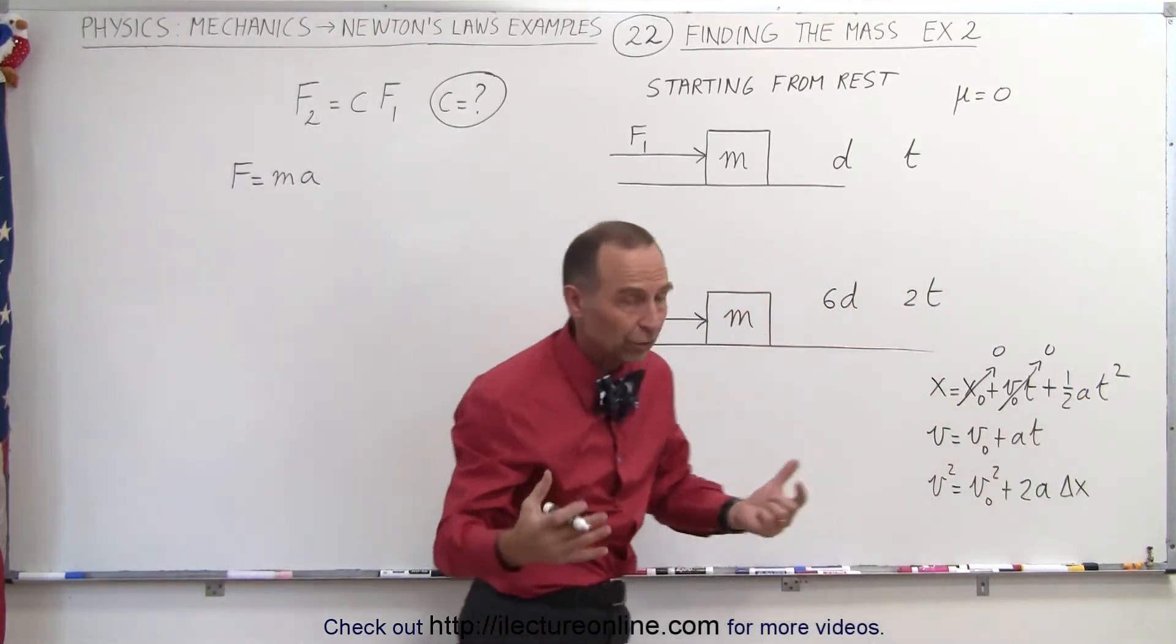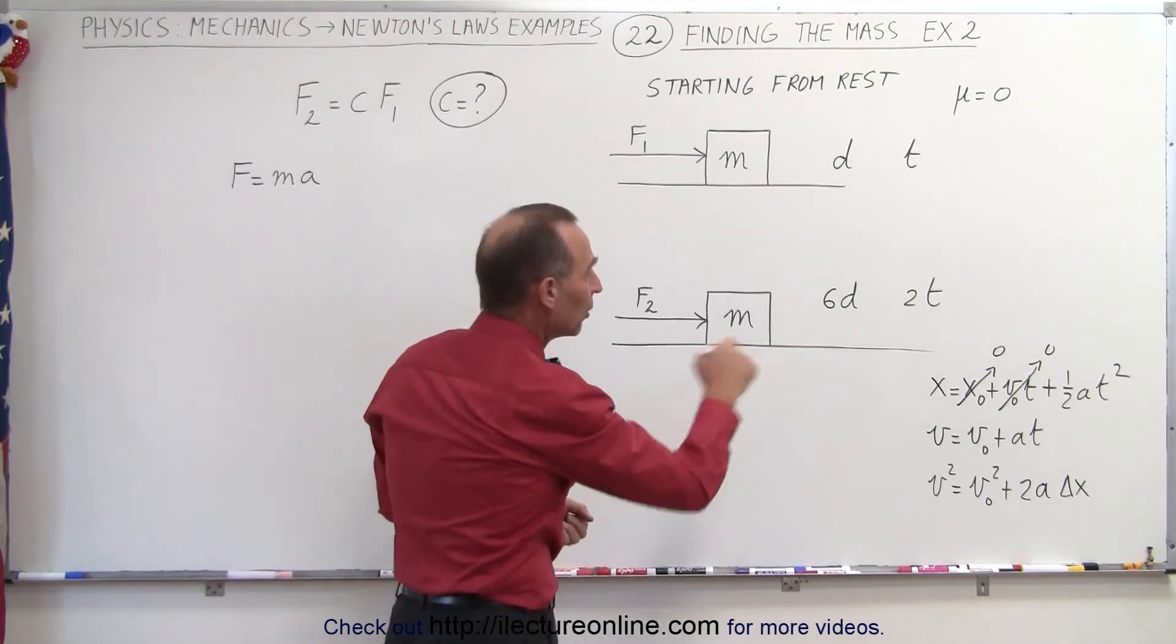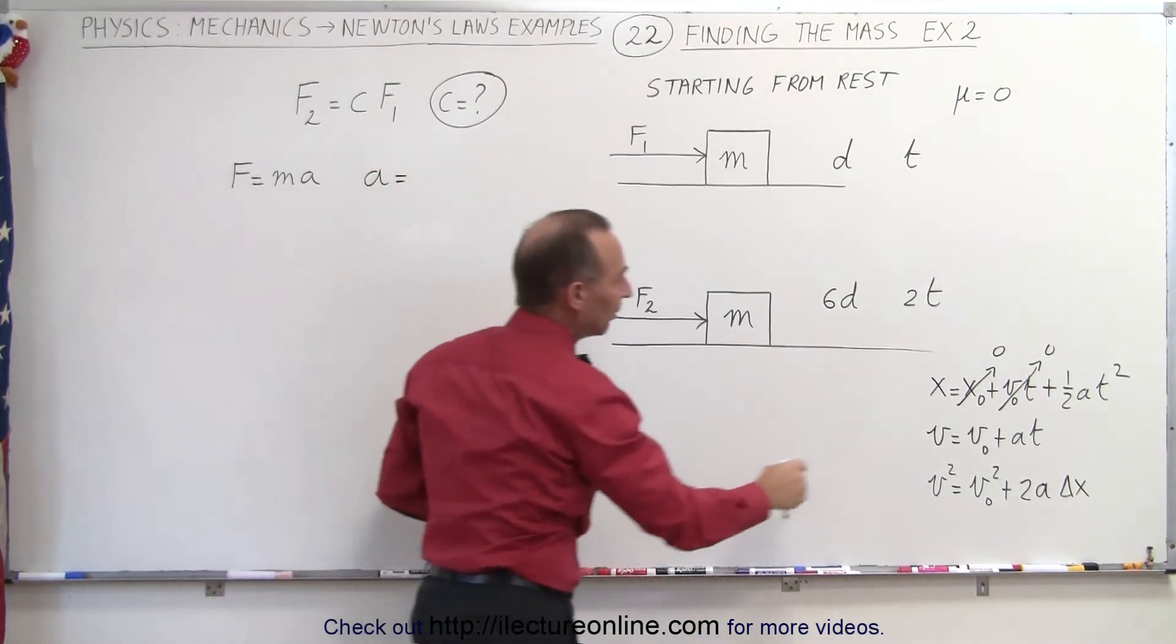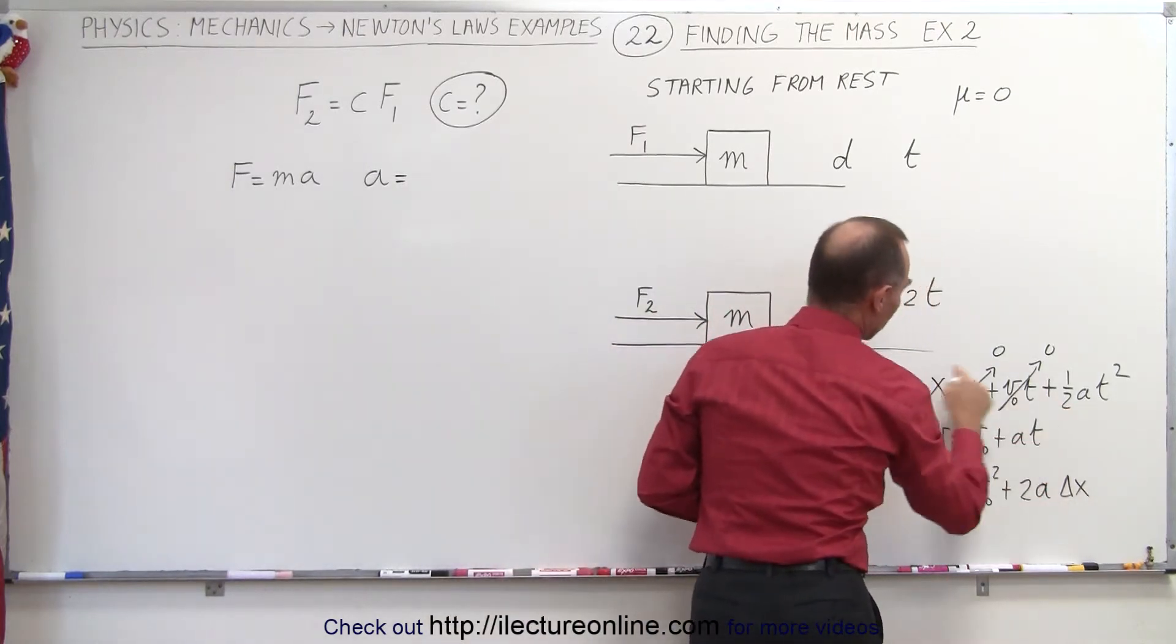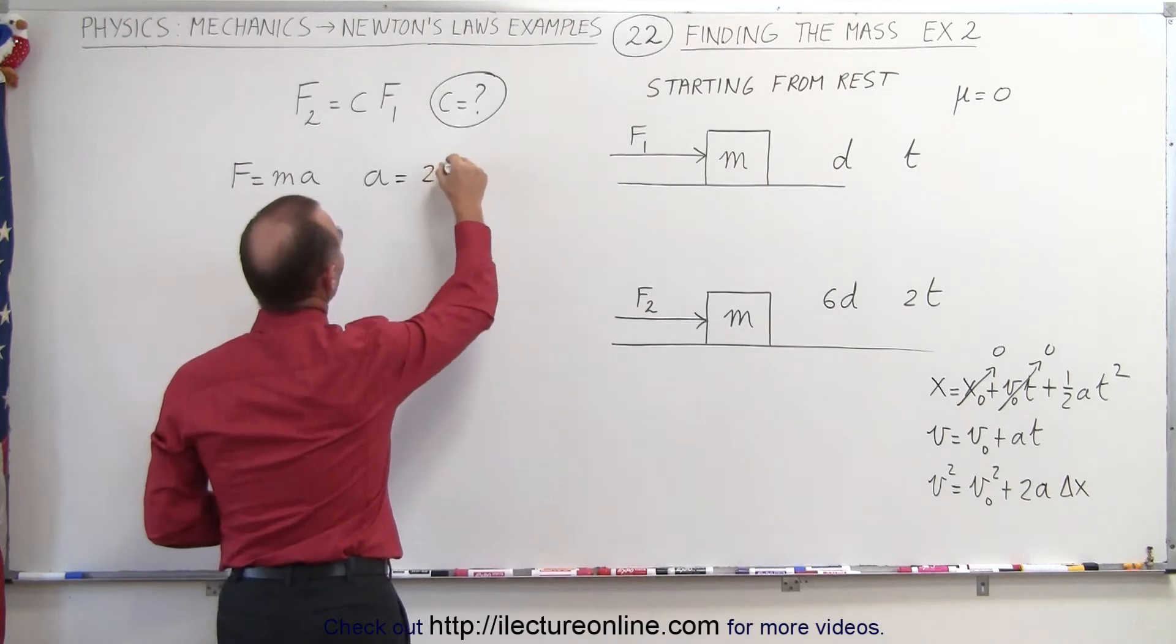Now in this case, in general terms, we know that the distance is d and the time is t. So we can use that equation. We can say then that a is equal to, if we solve this equation for a, it'd be two times x divided by t squared.